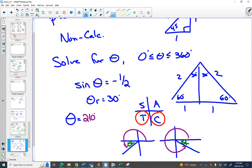If it's in quadrant 4, all the way around is 360, too much, minus my reference angle of 30, is 330 degrees.